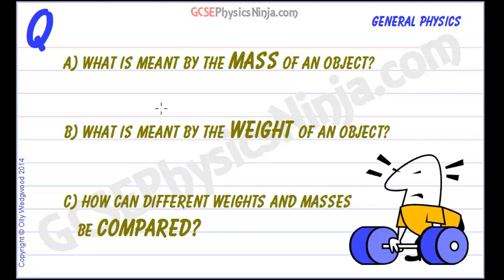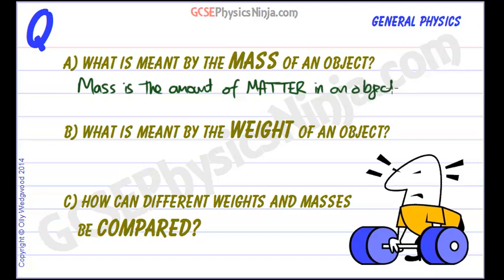What is meant by the mass of an object? What do we mean by mass? Well, mass is the amount of matter in an object. We're really talking about how many atoms it's got in it, and in those atoms, how many protons and neutrons are there which give the atom its mass or the amount of matter.